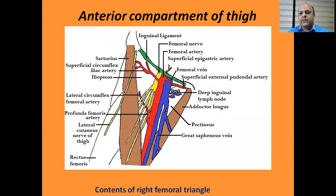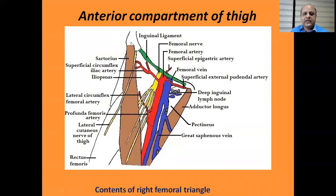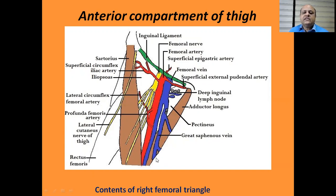In the anterior compartment of the thigh, we study two important things. One is a triangular depression called the femoral triangle, which is present in the upper one-third of the front of the thigh, and the adductor canal, which is present in the middle one-third medial part of the front of the thigh. The femoral triangle is bounded by the sartorius muscle — its medial border forms one of the boundaries. The inguinal ligament, shown in green, forms the base of the triangle. The lateral boundary is formed by the medial border of the adductor longus, and where the lateral and medial boundaries meet, that point is called the apex of the triangle.